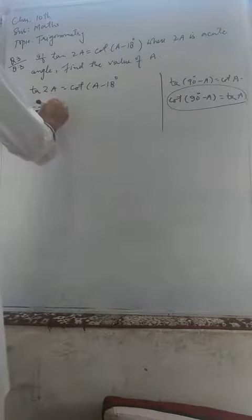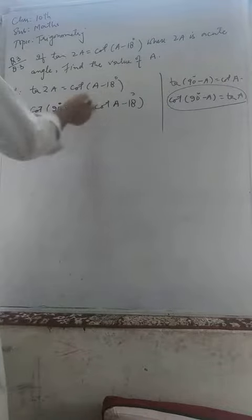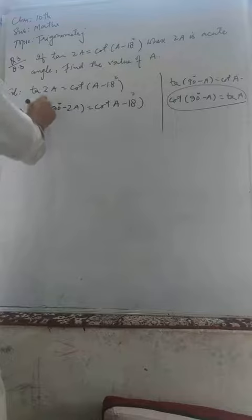of 90 degrees minus 2A equals cot(A minus 18), which implies that cot and cot will cancel, so here it will cancel.